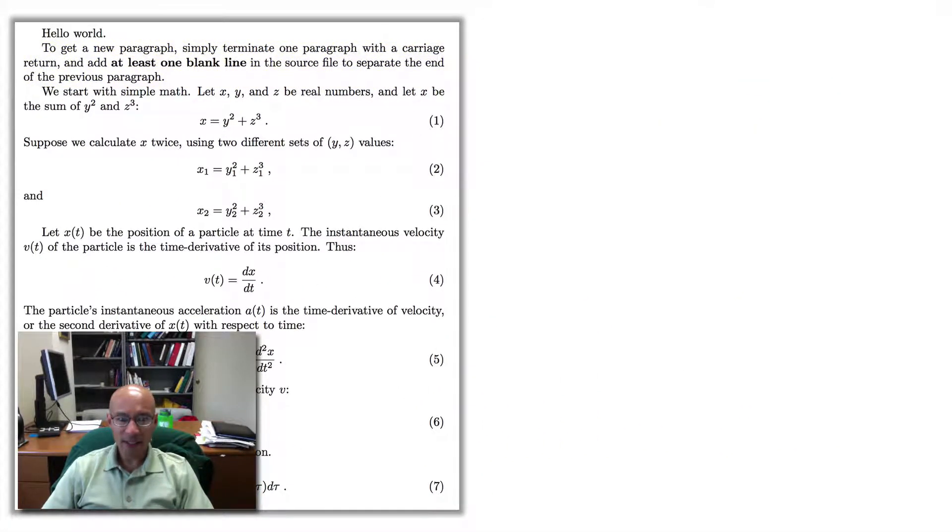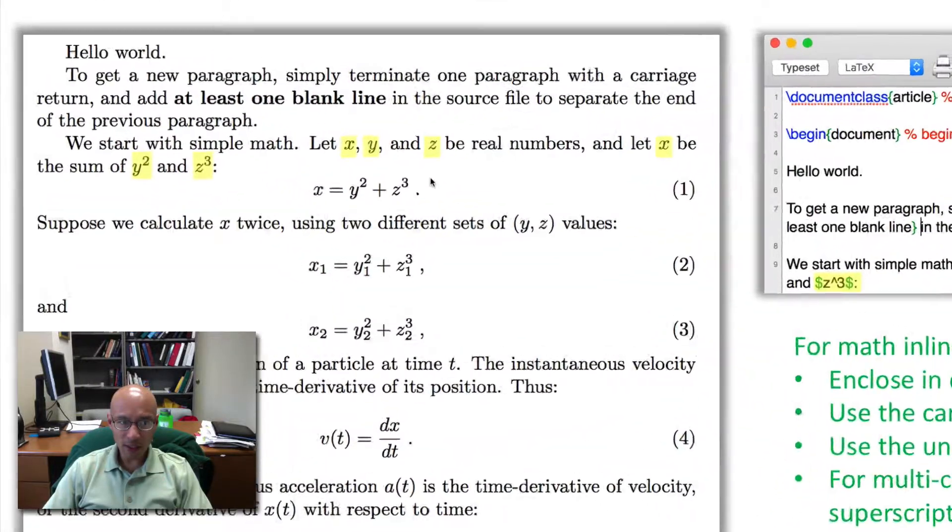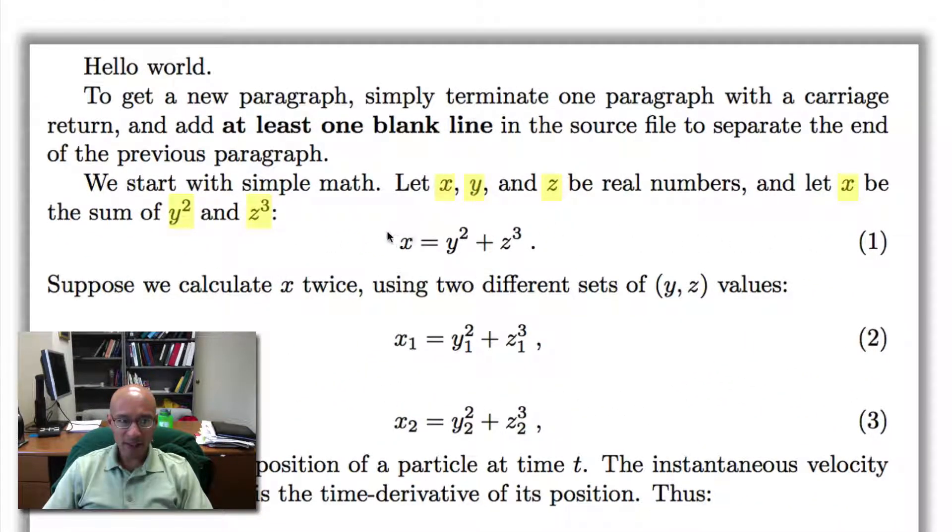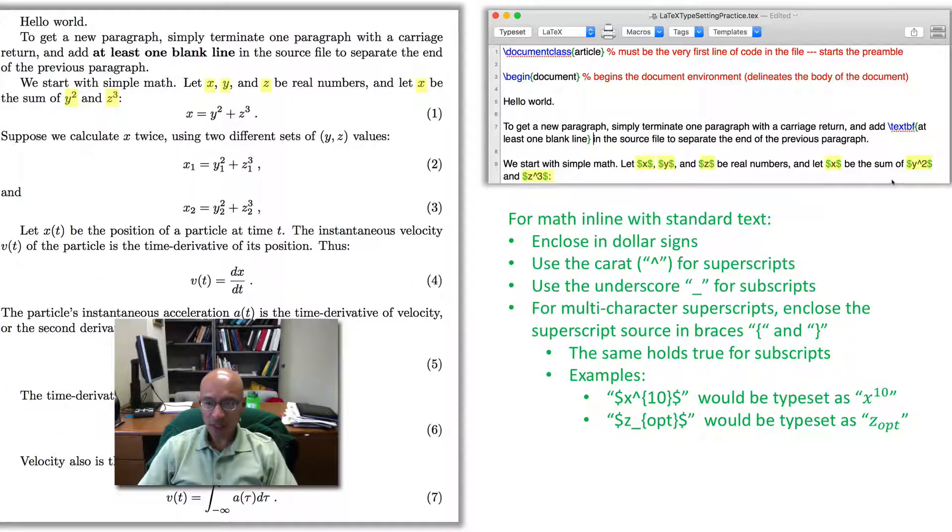The next thing we want to look at here is inline math. So inline math is mathematical typesetting that is set inside of the normal text and is part of the paragraph. It reads as part of the paragraph in the sentences. I've highlighted here the inline LaTeX in this first couple of sentences. And the way to get that is you type the paragraph with the characters you want, but the math expressions that are to be typeset get enclosed in a pair of dollar signs. And then to get the superscripts like y to the power 2 and z to the power 3, you use carats. So here is the y carat 2 and the z carat 3.